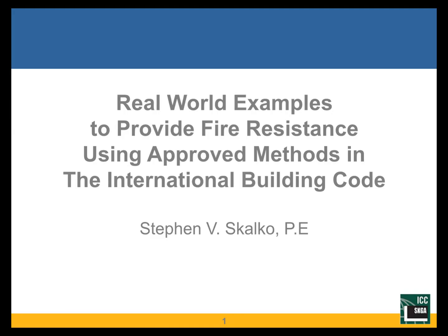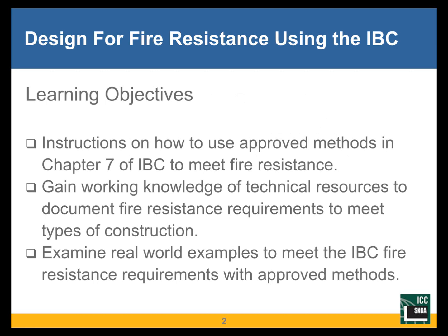Many times people have challenges when they work their way through what the International Building Code says and what it expects from the standpoint of providing fire resistance. With today's session I hope to help you look at what the approved methods are identified in Chapter 7 of the International Building Code, and take a look at some of the technical resources available to document fire resistance to meet the types of construction that the building code expects, and then use some real-world examples to show the application of these provisions.